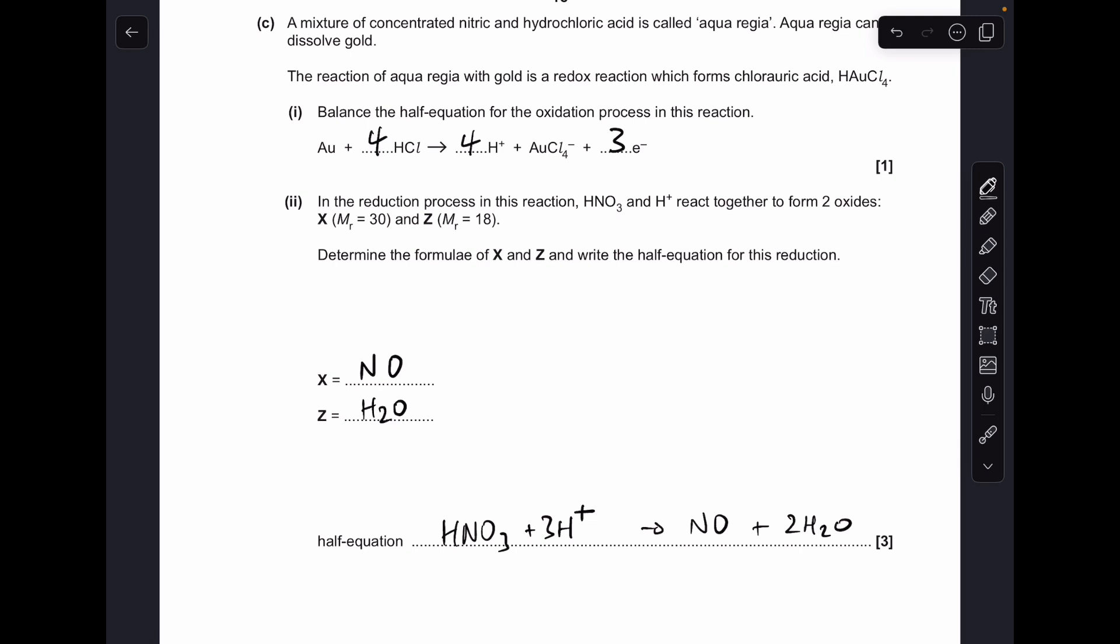And then the easiest way to do the charge is to look at the overall charge left and right. We've got three plus on the left, nothing on the right, so if we put three electrons in on the left, that'll take the overall charge down to zero.